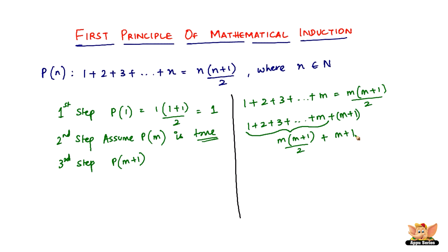So 1 plus 2 plus 3 plus dot dot dot plus m plus m plus 1 — we need to prove this equals the same formula. We know the sum up to m equals m into m plus 1 divided by 2, so we just have to add m plus 1 to that. Since m plus 1 has no denominator, we write it over 1 and take the LCM, which is 2. So we get m into m plus 1 plus 2 times m plus 1, all over 2.